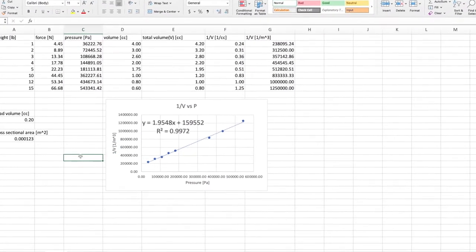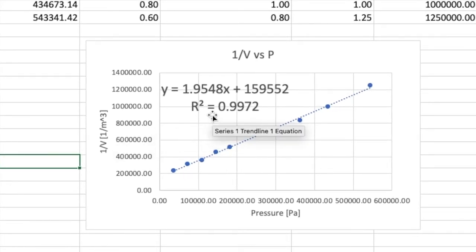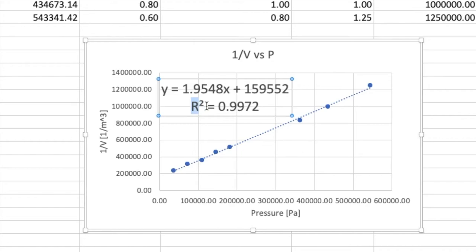The closer your R-squared value, or your correlation coefficient, is to 1, the more linear your graph. Our plot of 1 over volume versus pressure was remarkably linear. So, clearly, Boyle's law holds. With some careful work, you should be able to get a good straight line as well.